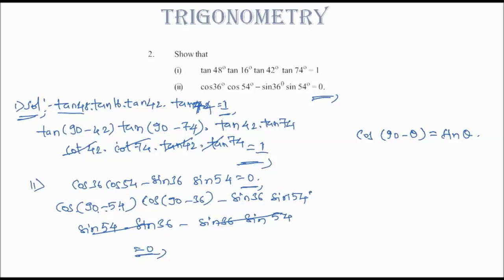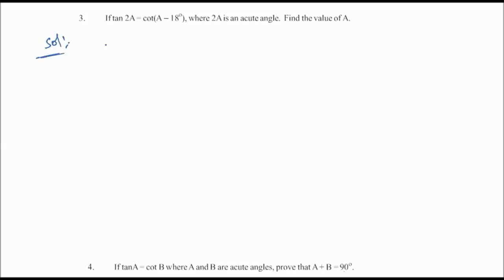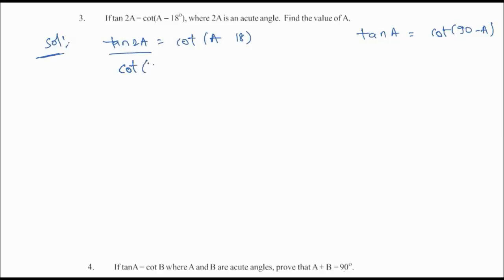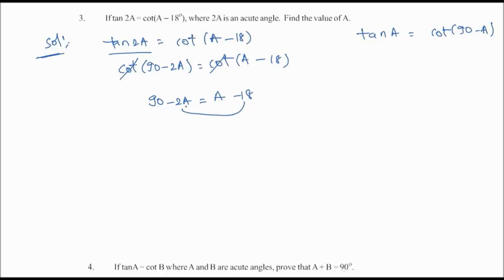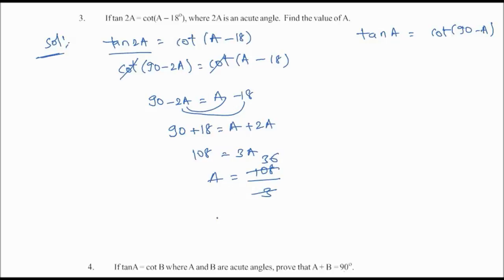Next solution: tan 2a = cot(a - 18°). We write tan 2a as cot(90° - 2a). So cot(90° - 2a) = cot(a - 18°). The cot cancels, giving 90° - 2a = a - 18°. Rearranging: 90° + 18° = a + 2a, so 108° = 3a, therefore a = 36°.